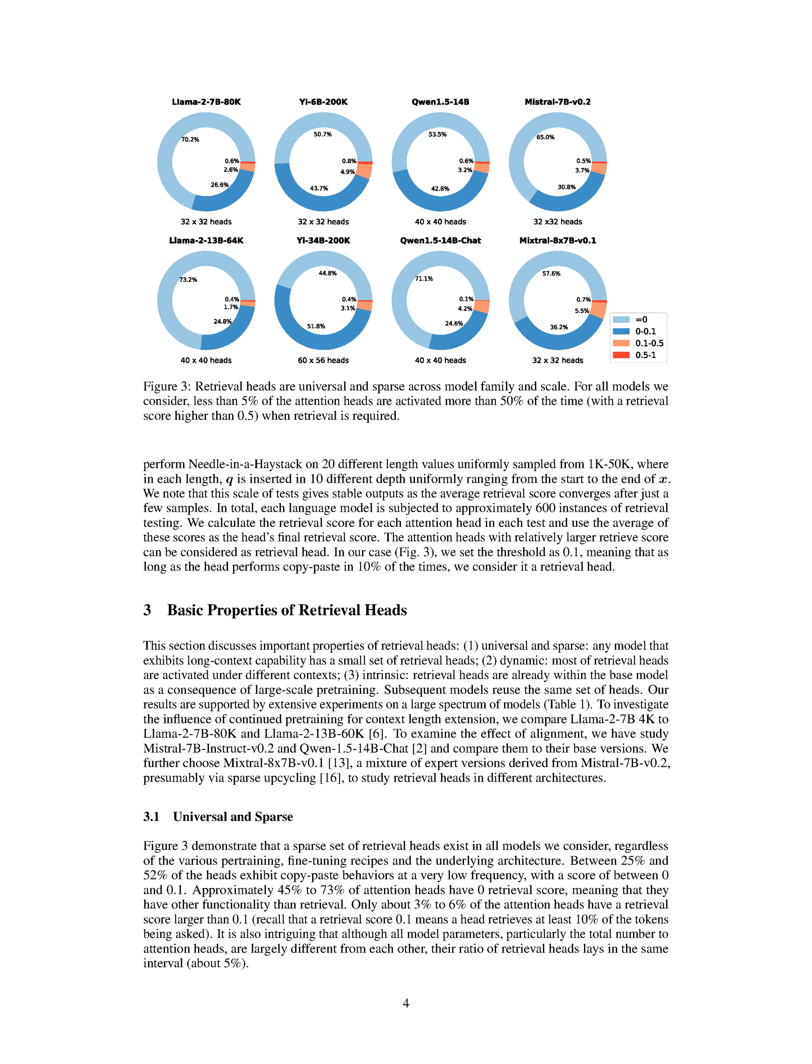In this section, we delve into understanding how long context language models leverage information from various parts of the input. By conducting extensive experiments across different model families, scales, and fine-tuning methods, we identify specific retrieval heads within the models that are responsible for searching and incorporating relevant information from the input to the output. These retrieval heads play a crucial role in determining whether the model accurately reflects the input or generates hallucinated outputs, shedding light on the model's ability to retrieve and reason based on the input information.